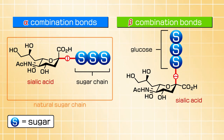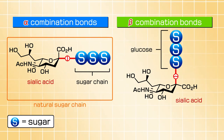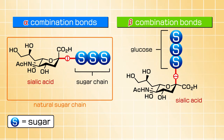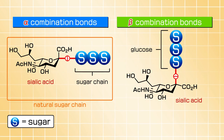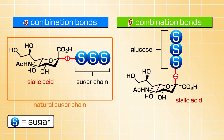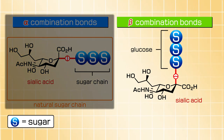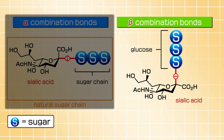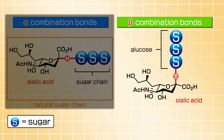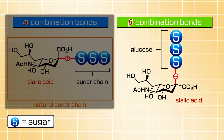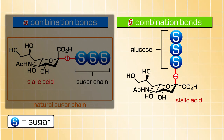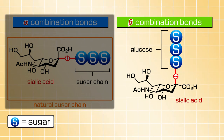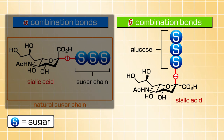While chemical glycosidation of sialic acid can yield beta-glycosidic linkage together with alpha-glycosidic linkage, only alpha bonds exist in natural sugar chains, and the fully alpha-selective glycosidation of sialic acid has never been chemically achieved.